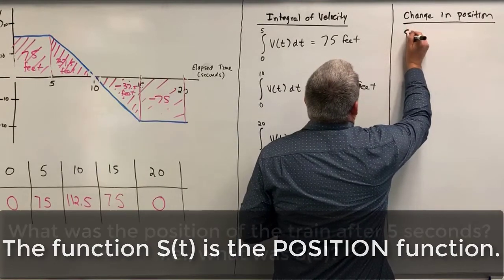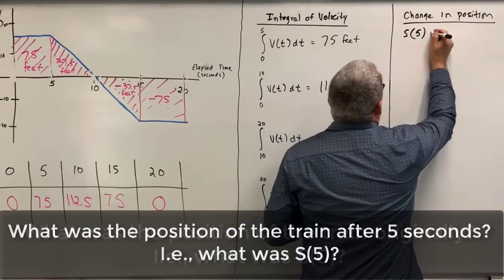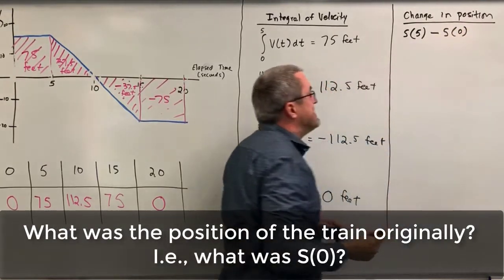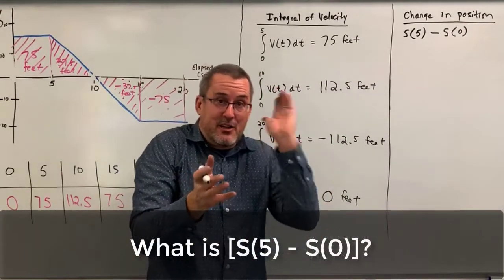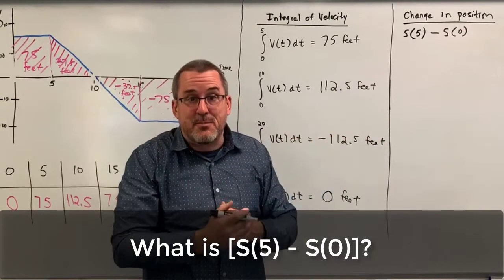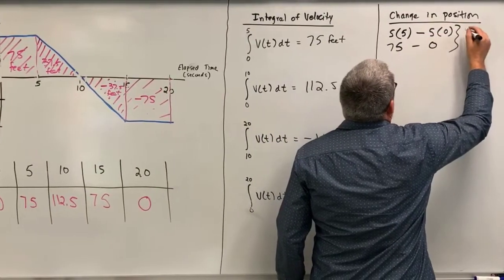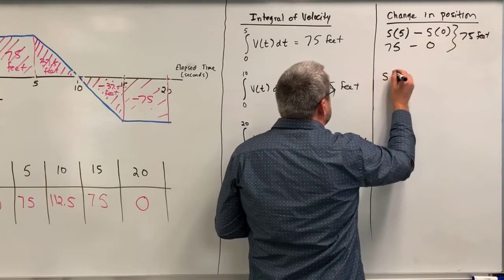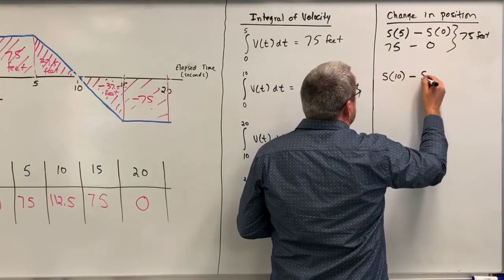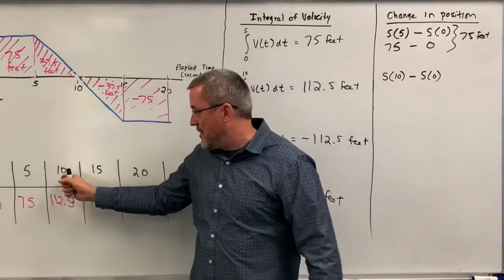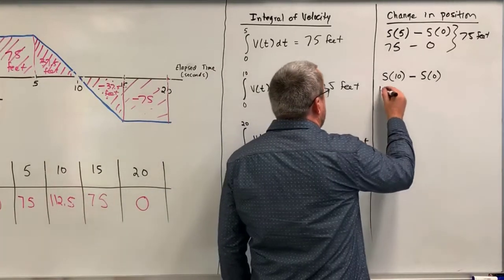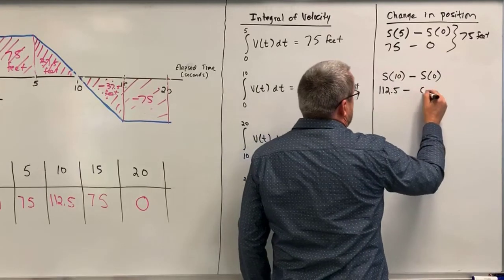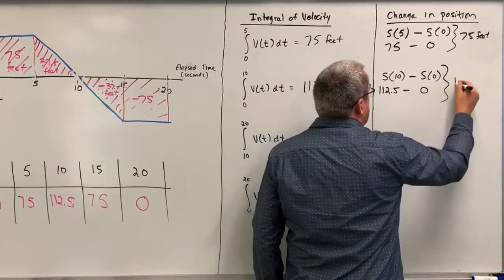Let's start with this: what was the position of the train after five seconds, and let's compare that to the position of the train initially at time t equals zero seconds? The position of the train after five seconds was 75 feet; the position of the train initially was 0 feet, so the train changed its position by a total of 75 feet. Let's also examine the position of the train at 10 seconds compared to its position at 0 seconds. The position at 10 seconds was 112.5 feet; initially 0 feet — a total change of 112.5 feet.